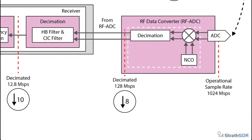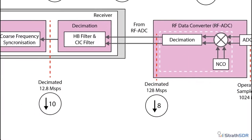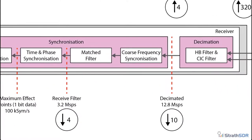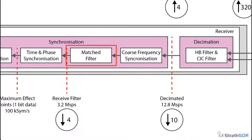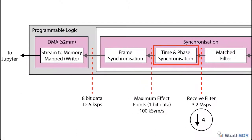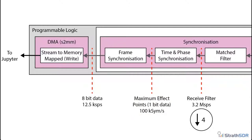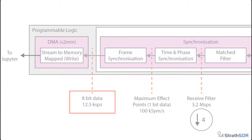Turning to the receiver, the RF ADC will be configured to a sample rate of 1024 ms per second. The signal undergoes a series of decimation stages. At the coarse frequency synchronization stage, the sample rate will be 12.8 ms per second. After matched filtering to reduce inter-symbol interference, the signal is further decimated by a factor of 4, achieving an effective sample rate of 3.2 ms per second. The time and phase synchronization stages extract the maximum effect points — the points corresponding to the actual binary data originally transmitted. Finally, the 100 ks per second signal is deserialized into bytes at a rate of 12.5 ks per second.